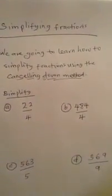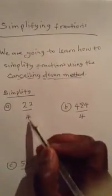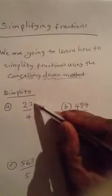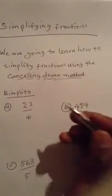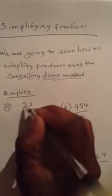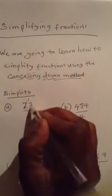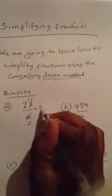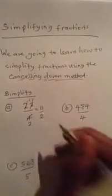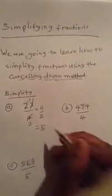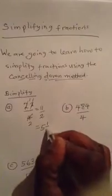For example, we want to simplify 22 over 4. We think of a number that goes into both 4 and 22. The easiest one we can think of is 2. 2 into 4 gives 2, 2 into 22 gives 11. So we are left with 11 over 2, which we can write as a mixed fraction as 5 and 1 over 2.